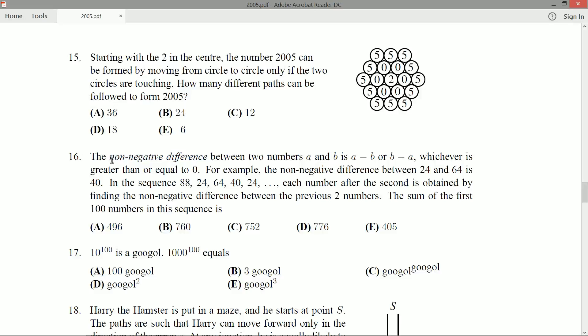So non-negative, for example the non-negative difference between 24 and 64 is 40. So there's two differences here, negative 40 and 40, we take the non-negative one, 40.